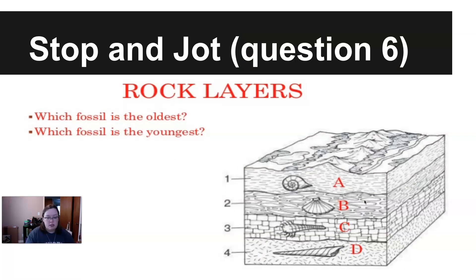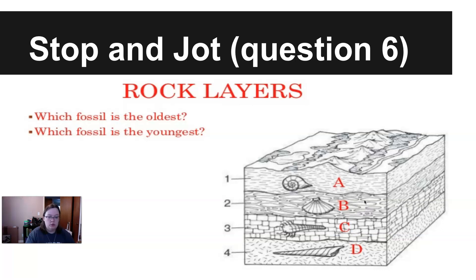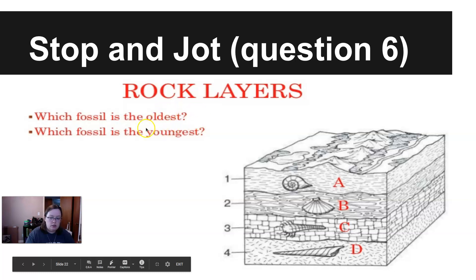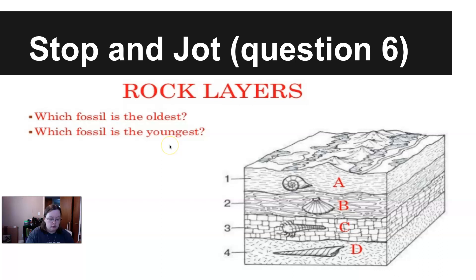Go ahead and pause here and answer question number six on your document. Question six shows a diagram and asks you to figure out which section — A, B, C, or D — is the oldest section of rock, and which one is the youngest or most new section. Go ahead and pause and answer that question.